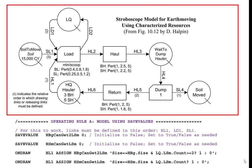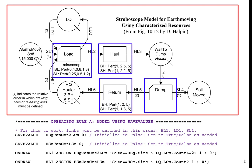The stroboscope network is shown in the figure. Notice that there is only one loader queue called LQ, and only one hauler queue called HQ. Also, there is only one load activity, one haul activity, one tap activity, and one return activity.